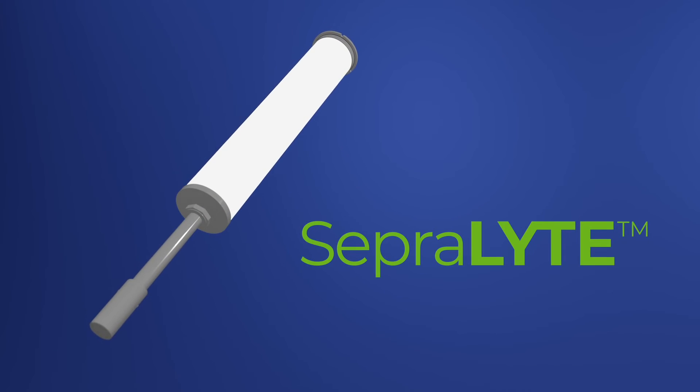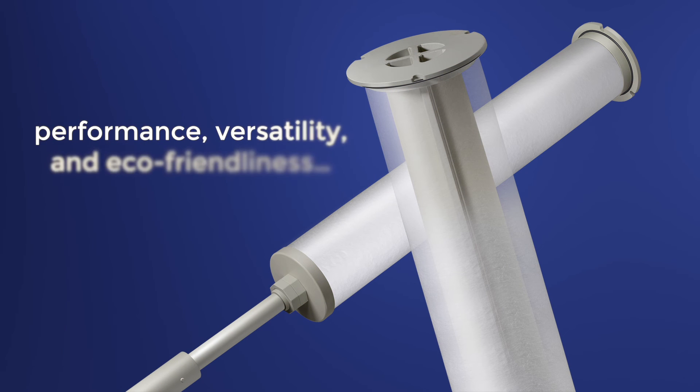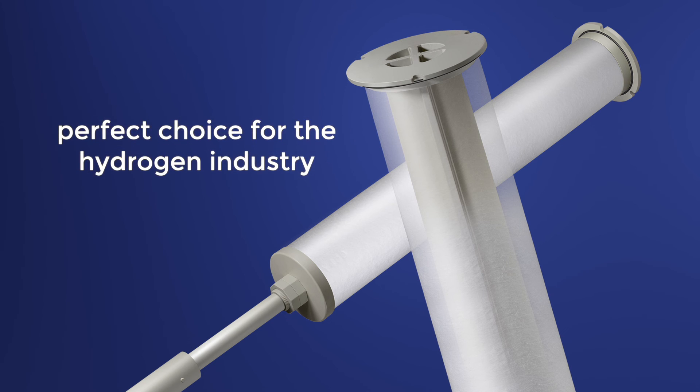Pall Seprolite liquid gas coalescers are the next step in green hydrogen gas processing. Their performance, versatility, and eco-friendliness make them the perfect choice for the hydrogen industry.